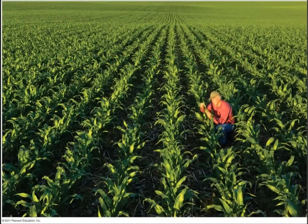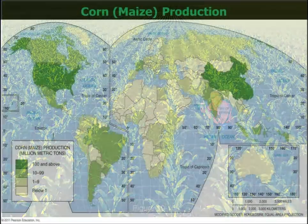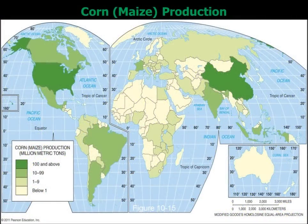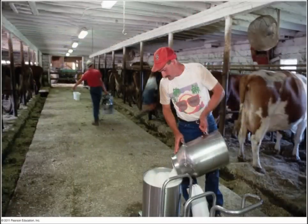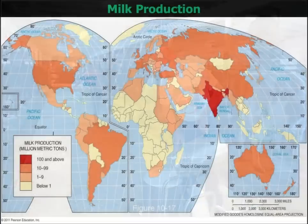Then we looked at nomadism, or pastoral nomadism. One of the key issues for them is their climate, and that's why it is practiced there — they live in a dry climate. This is normally territory or land that they occupy and own; they just move from one region to another.